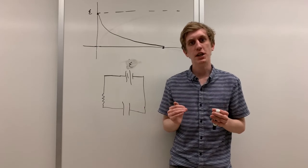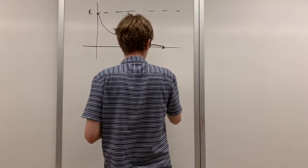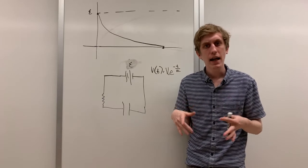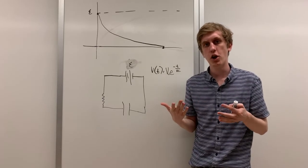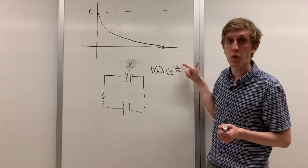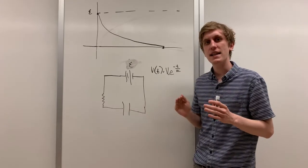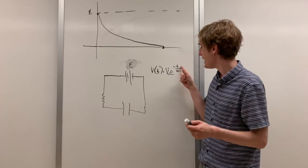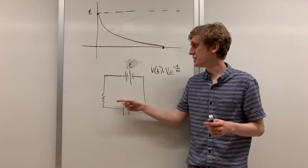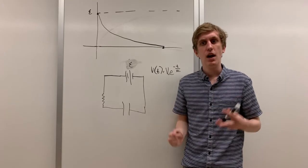For a discharging capacitor, the voltage across the capacitor can be described with this equation. At time zero, the capacitor just has voltage V naught. That's just whatever voltage it was charged to by a battery. As time passes, in other words, as T increases, this capacitor starts to discharge. Notice that in this equation, that T is divided by RC. R is just the resistance of the resistor, and C is just the capacitance of the capacitor.